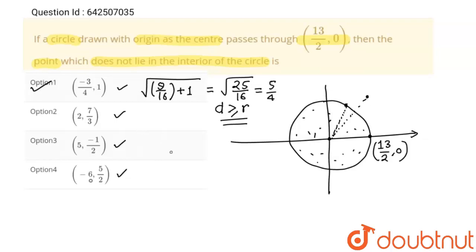Now I am going to find option 2. The second option point distance from the origin is: (2 - 0)² = 4, plus (7/3 - 0)² = 49/9. This will give us √(85/9), which is √85/3.